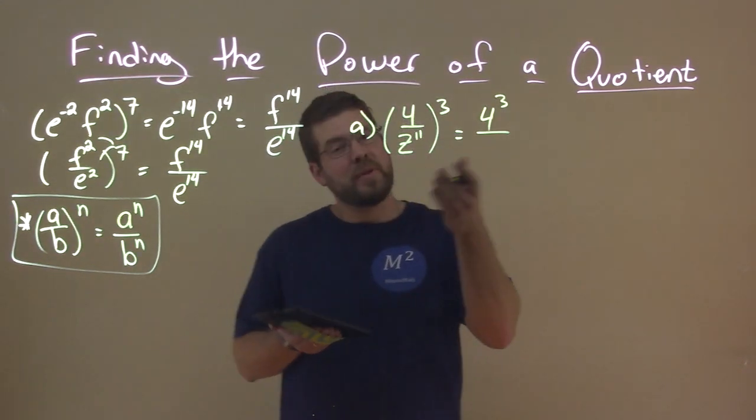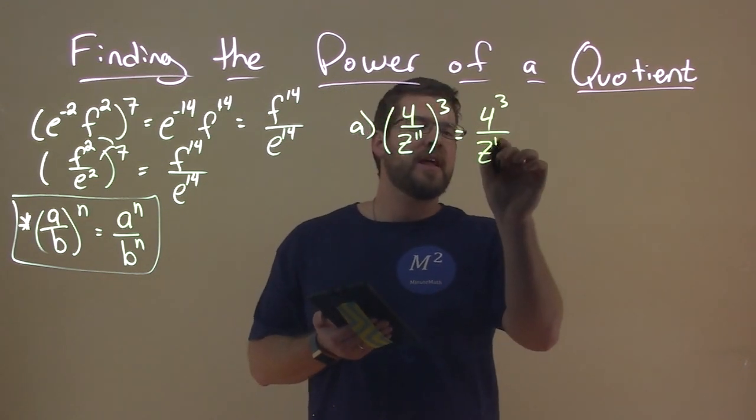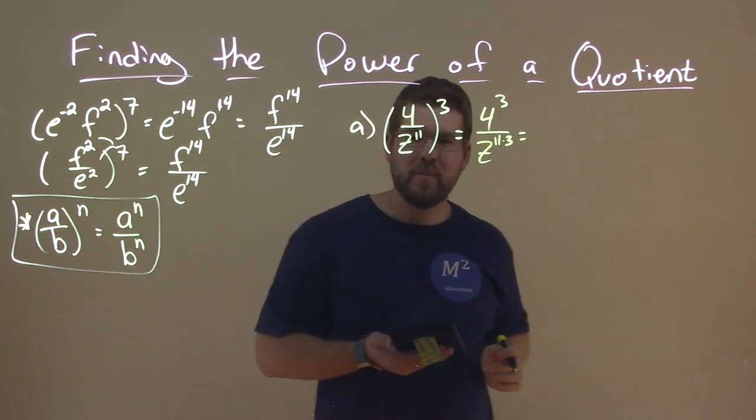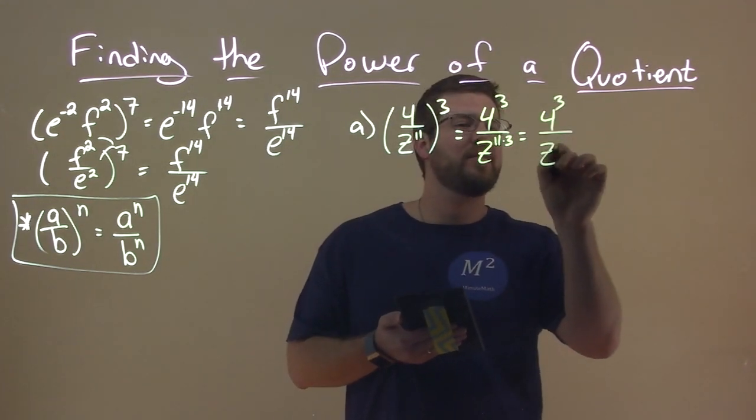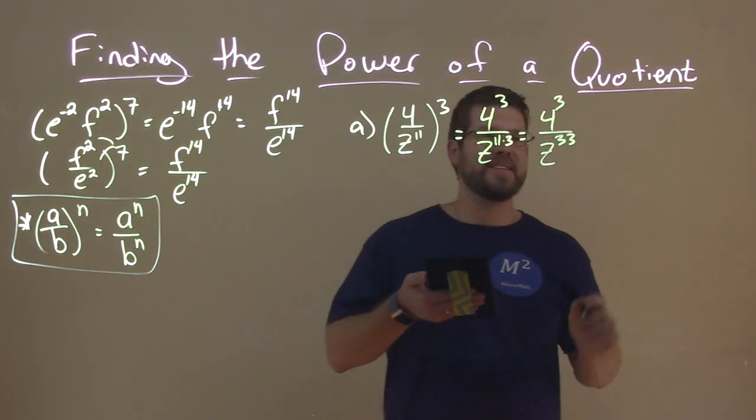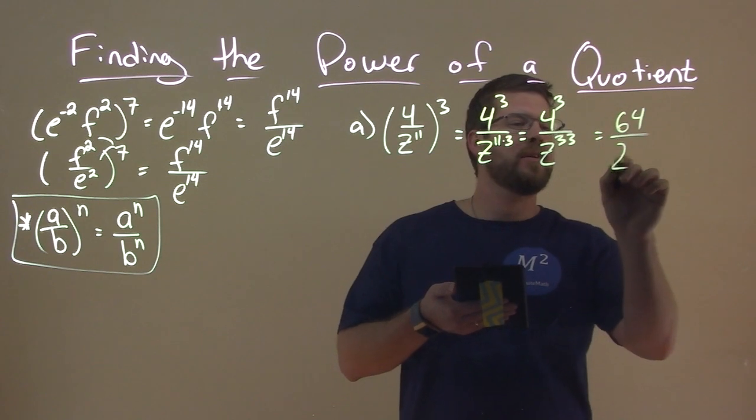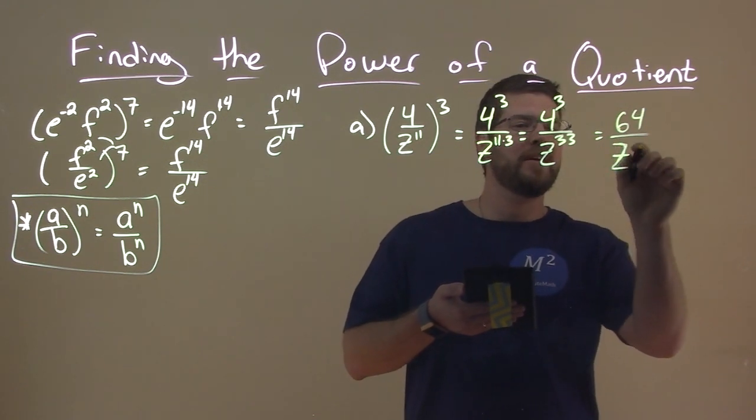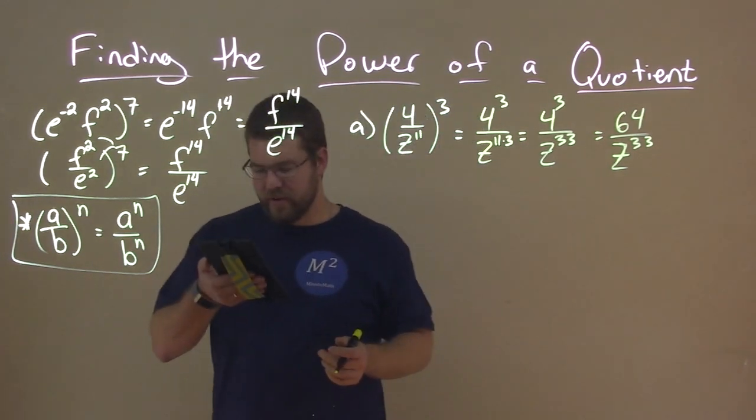Remember, we multiplied the exponents. There's like a 1 there. 1 times 3 is 3. And we have z to the 11 times 3, which hopefully by now you can get through that. It's 4 to the 3rd over z to the 33rd power. And 4 to the 3rd is 64. And we have our answer, 64 with a bad z to the 33rd power.